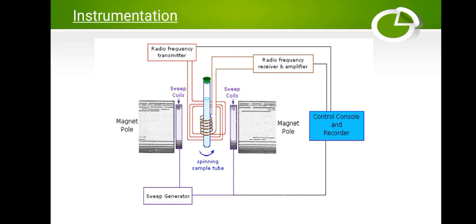Here we have an NMR instrumentation diagram. The technique of NMR involves placing the sample in a magnetic field generated between the poles of either a permanent magnet or an electromagnet made from coils. From my image, you can see the magnetic poles, the sweep coils, the radio frequency transmitter, the sweep generator, the radio frequency receiver and amplifier, and the control and console recorder.